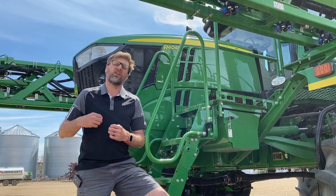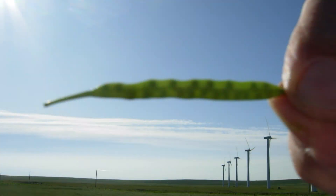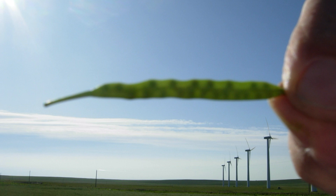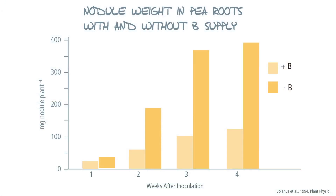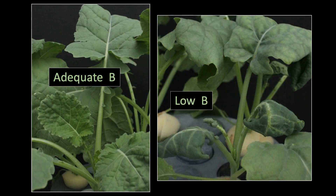So when we get deficiency of boron, what are the symptoms we want to be looking for? Well, firstly we're going to see poor pod set and poor seed set. Secondly, we're going to see a reduction in the rhizobia in lentil crops, so this is important in things like peas and lentils. Thirdly, we're going to see a significant reduction in root mass, because all of those sugars made during photosynthesis that should have been stored will leak out through the roots. We're also going to see a breakdown in the growing point of the plant.